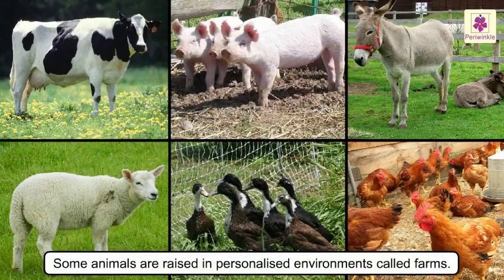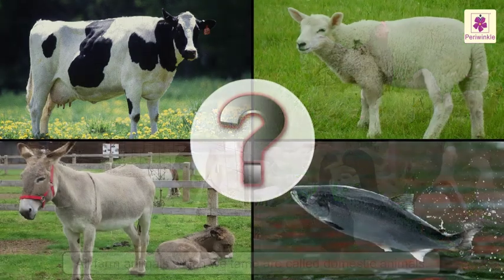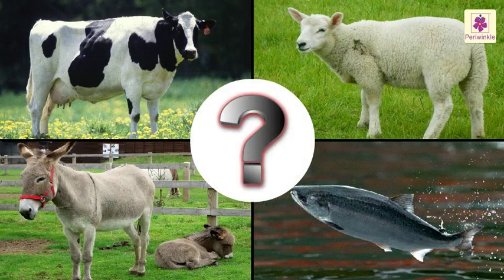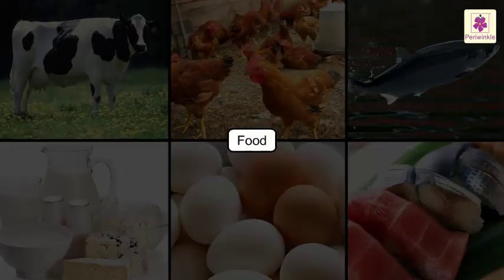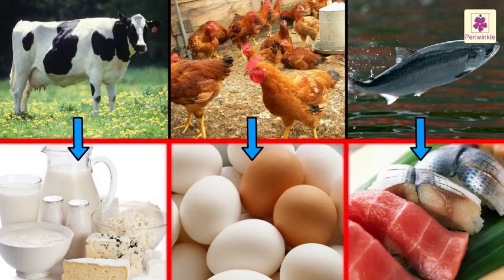Some animals are raised in controlled environments called farms. All these farm animals which we tame are called domestic animals. Now let us see how animals are important to us. Animals give us food.